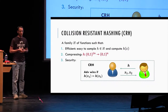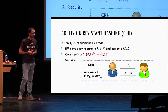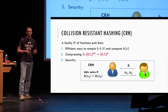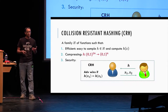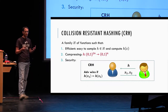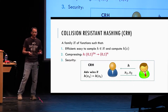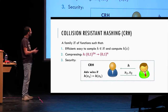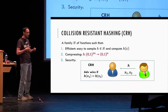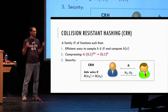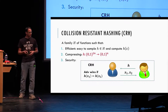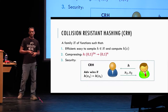What is a collision resistant hash? I have a family of functions where each member is efficient and easy to sample. Every function in this family is compressing — for this talk, let's assume it compresses 2n bits to n bits. The security is modeled by a game: the challenger picks a random function h from the family and sends it to the adversary, whose goal is to find x1 and x2 that are different but collide under h. We say the CRH is secure if no polynomial time adversary can find such a collision with good probability.